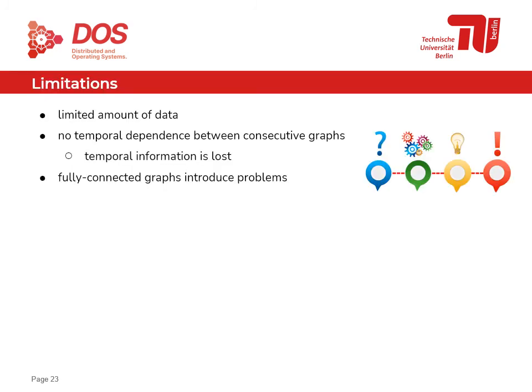We now present the limitations encountered during evaluation. First, the limited amount of data caused tremendous differences between splits and led to overfitting in many cases. Second, temporal dependence between consecutive graphs is not preserved — the original temporal dependence of extracted sub-series is lost during optimization for the classification task. Third, fully connected graphs introduce problems because most graph methods expect a reasonable relationship between nodes, which is not the case when all nodes are connected to all others.